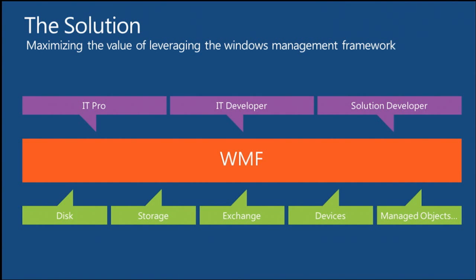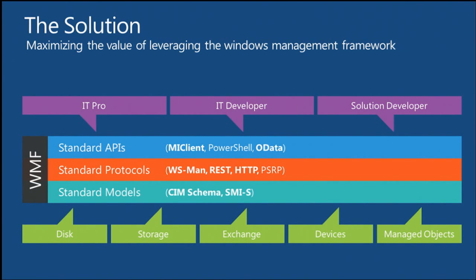Architecture is a design that transforms an end-by-end problem into an end-by-one problem, and that's what we're doing here. The Windows Management Framework is based on industry standards. If we just provided a proprietary way to expose and consume management objects, that wouldn't help because it would be Windows-specific, and we live in an ecosystem with Windows and non-Windows devices. Within WMF, we have three layers of investment. The first is the standard model based on CIM, the Common Information Model, which is an industry standard for describing management objects.